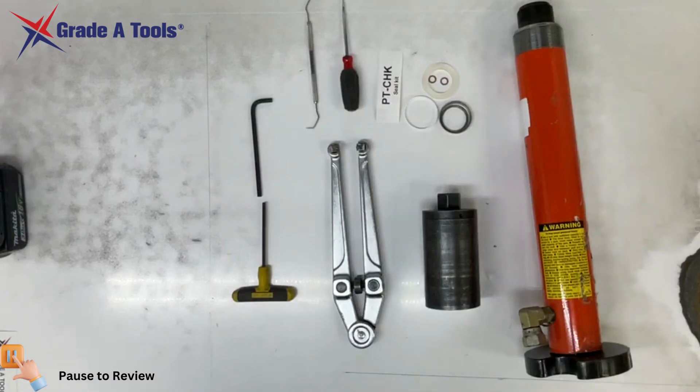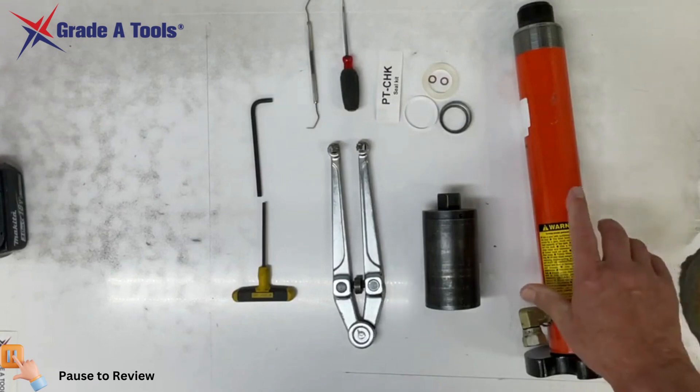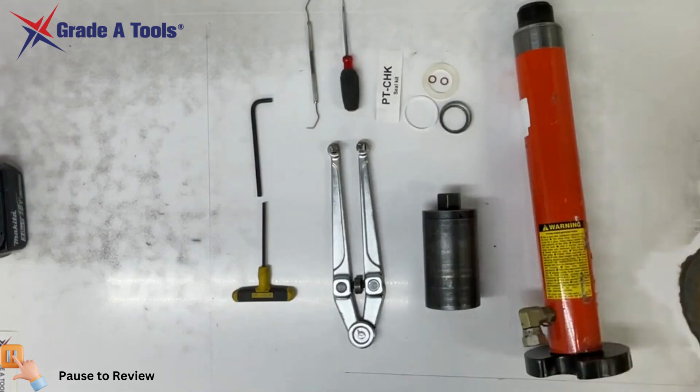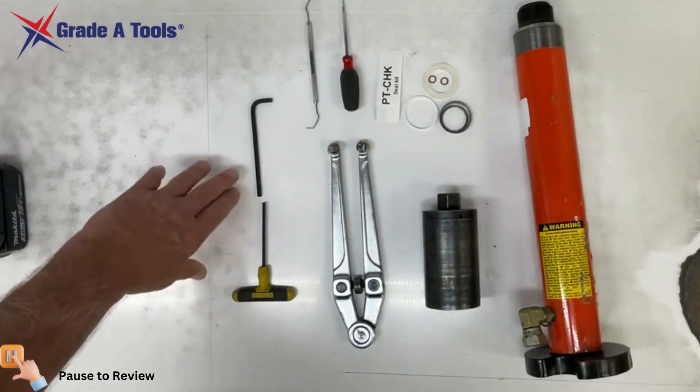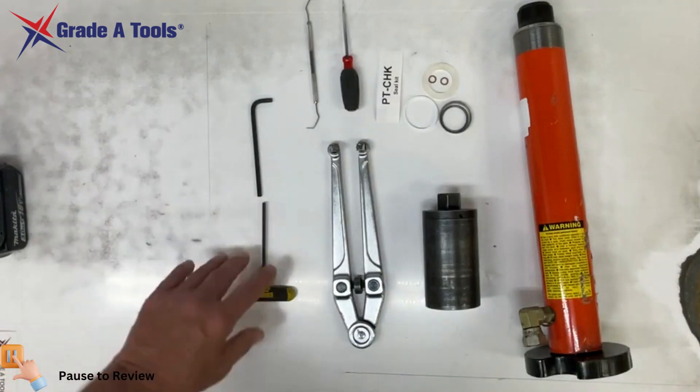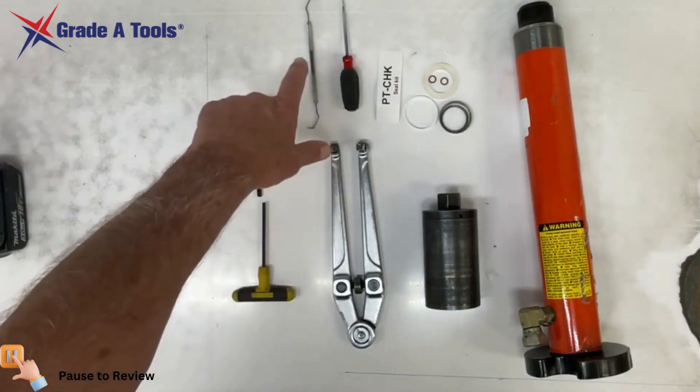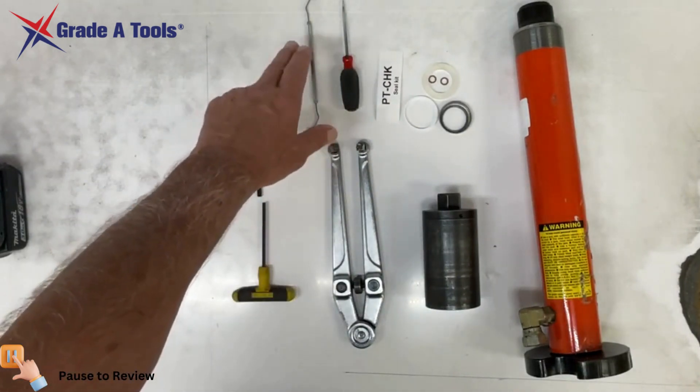Today we're going to teach you how to overhaul your Chief Frame Machine high-pressure hydraulic cylinders or rams. The tools that you're going to need will be a quarter-inch Allen wrench or T handle wrench, a small pick or screwdriver.